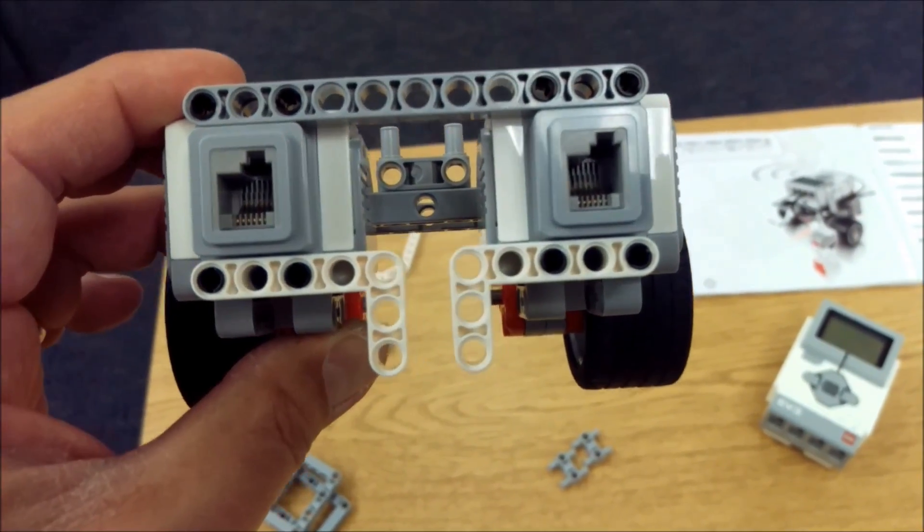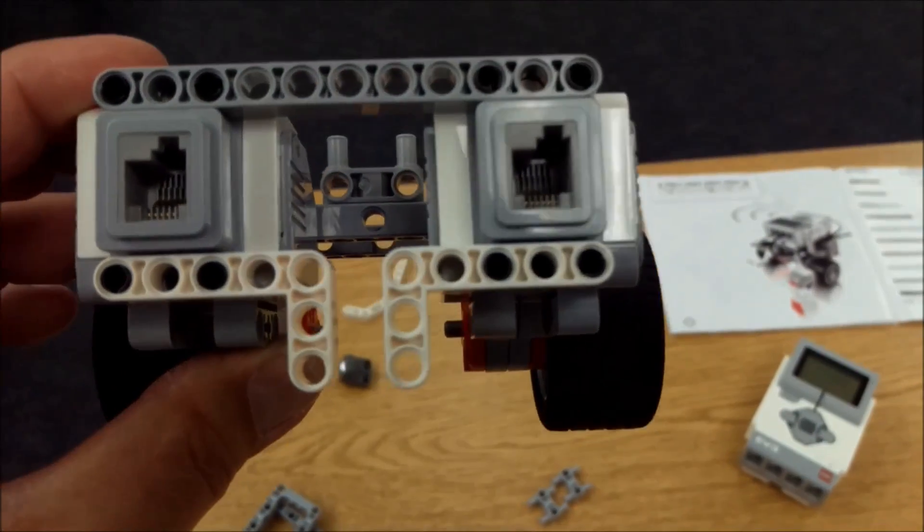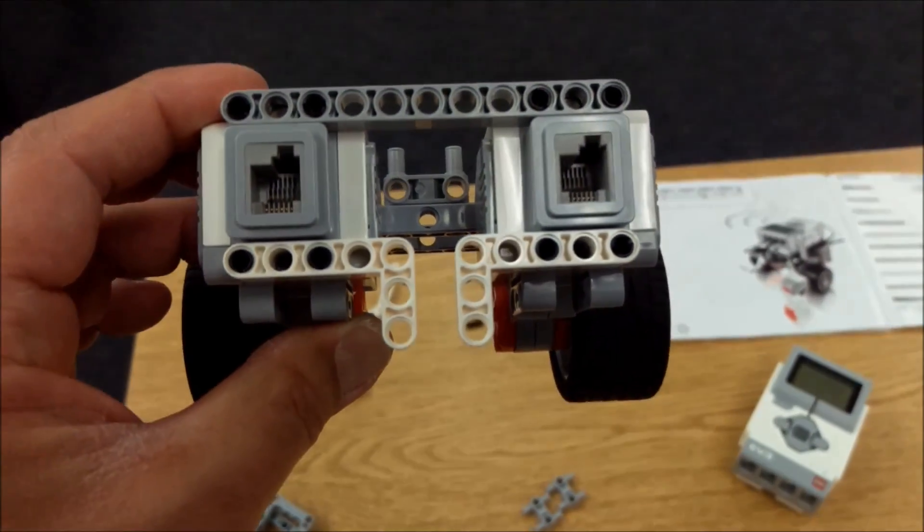And then I will take those two whites. They could again be gray. I'll go ahead and put those pieces on the black connectors like so.